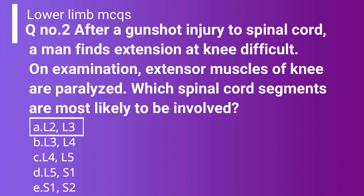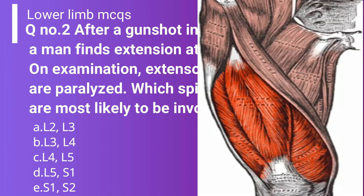The correct answer is Option B, L3-4, because the quadriceps femoris performs extension of the knee joint and it is supplied by the femoral nerve. The femoral nerve has nerve components of L2, L3, and L4.